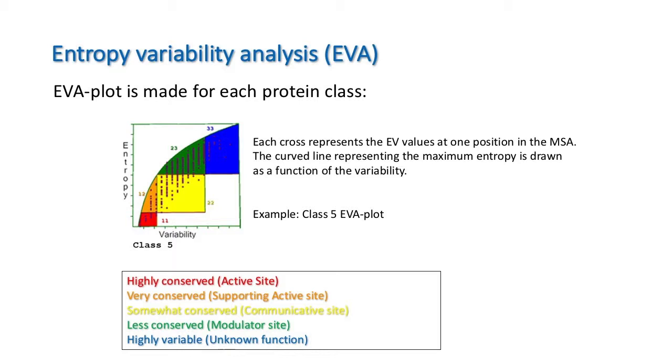Entropy variability analysis was used to develop an evolutionary model. Variability and entropy describe variability patterns in two different ways for each residue in the multiple sequence alignment. The most conserved residues are found in red and orange regions of the plot, while the least conserved and most variable regions are colored blue.